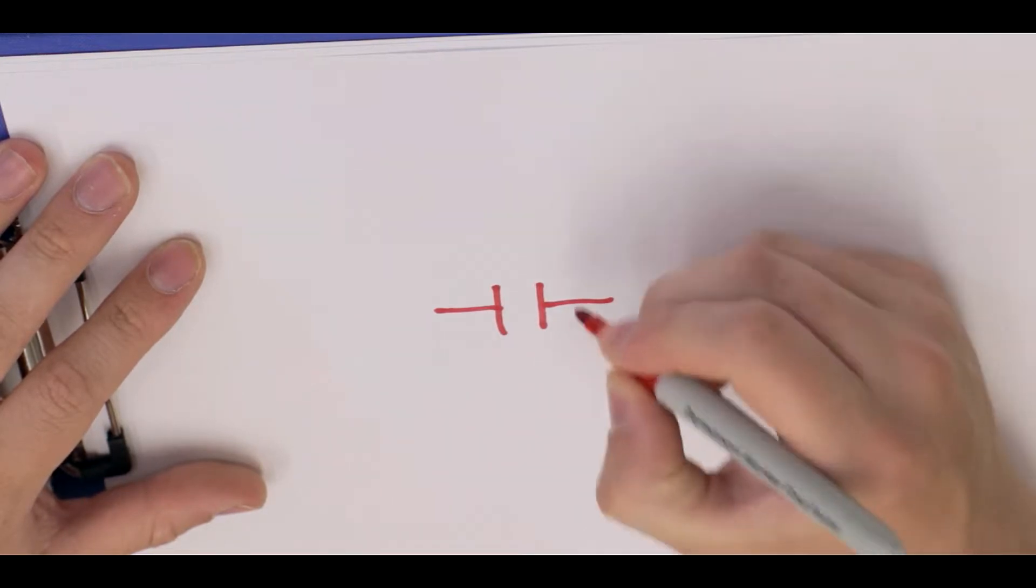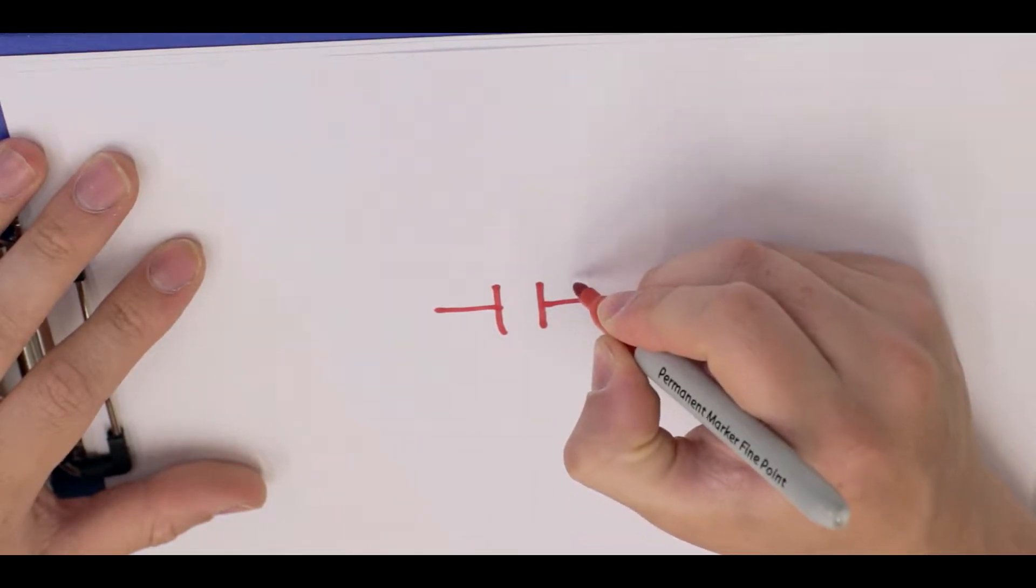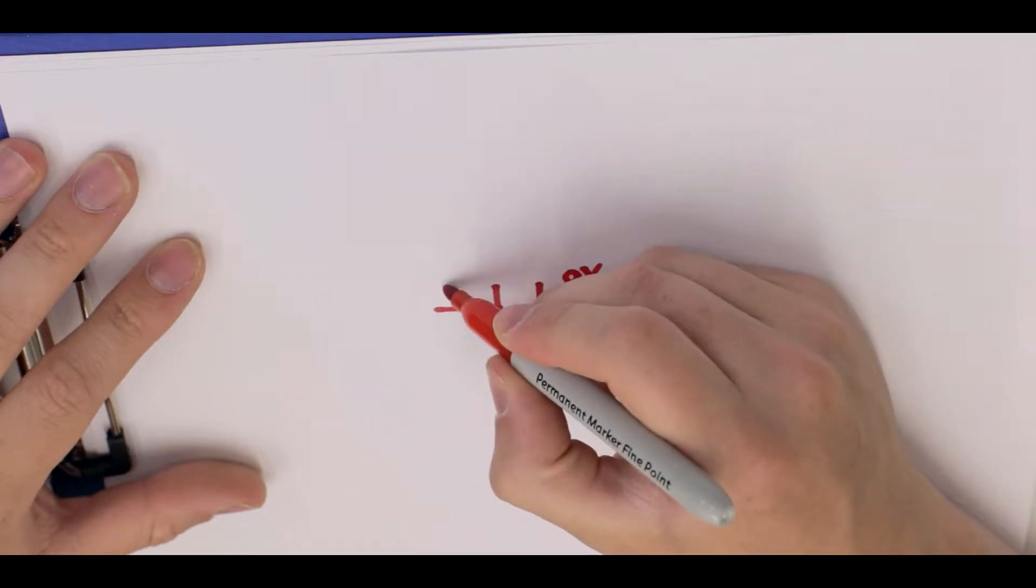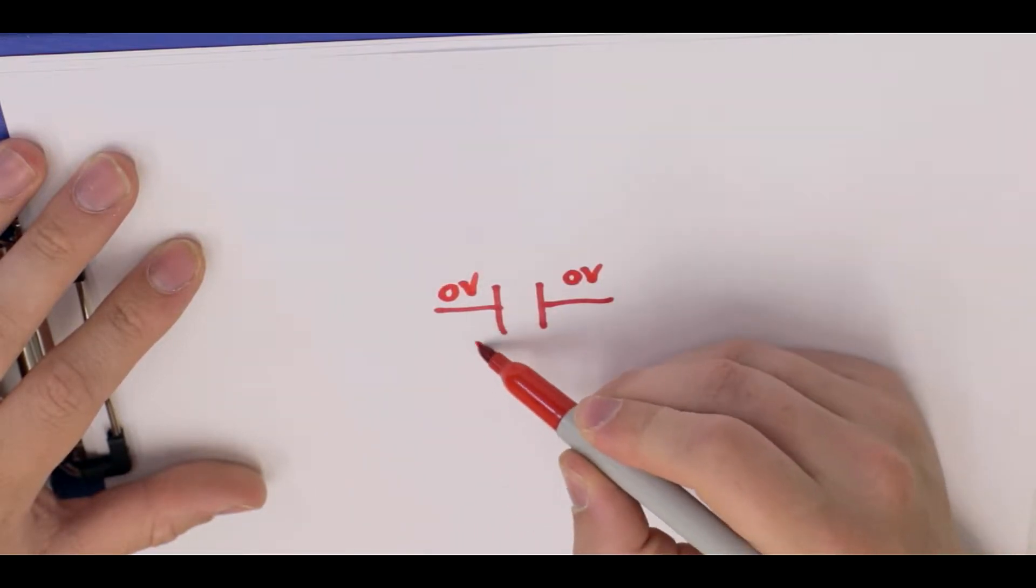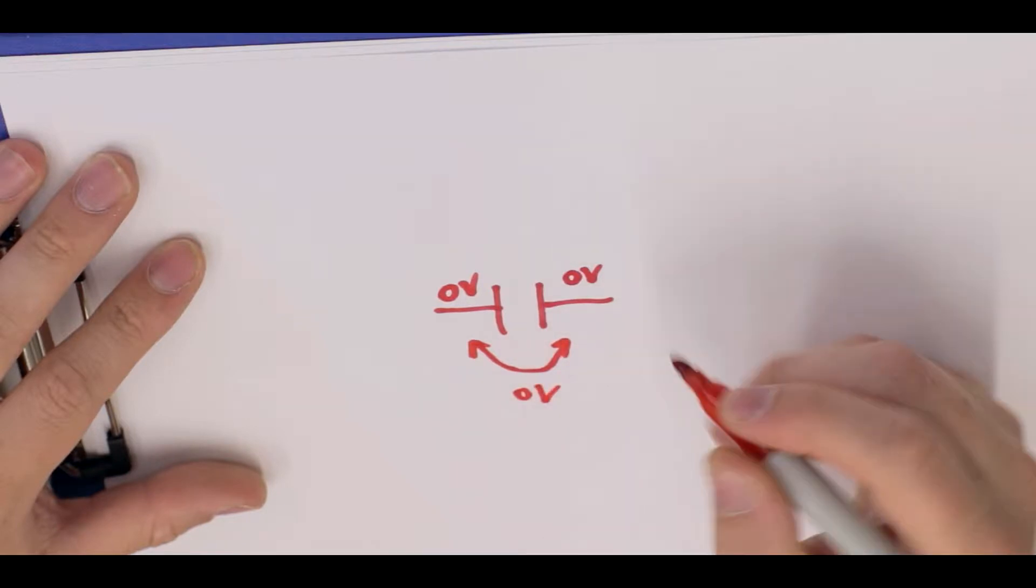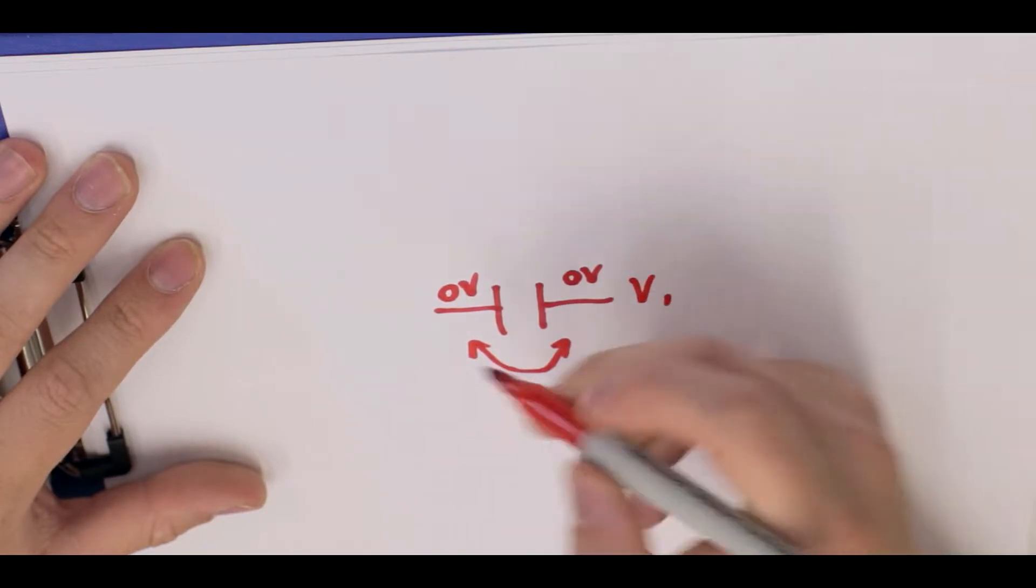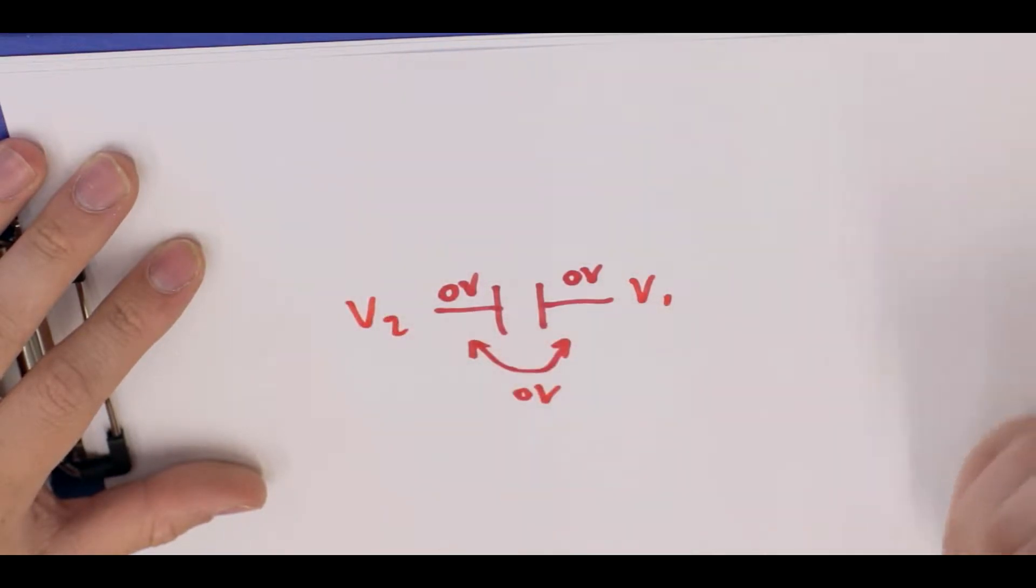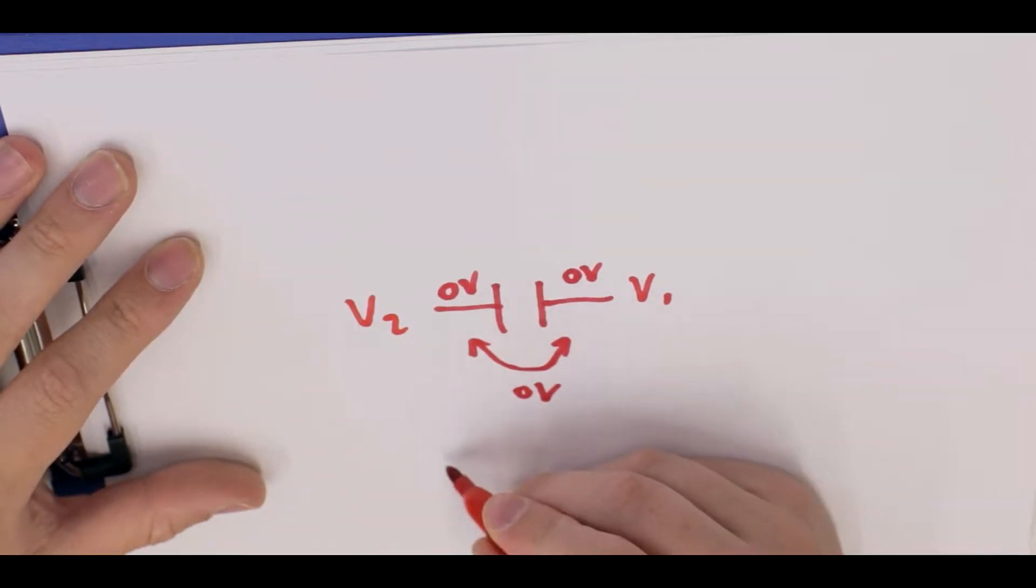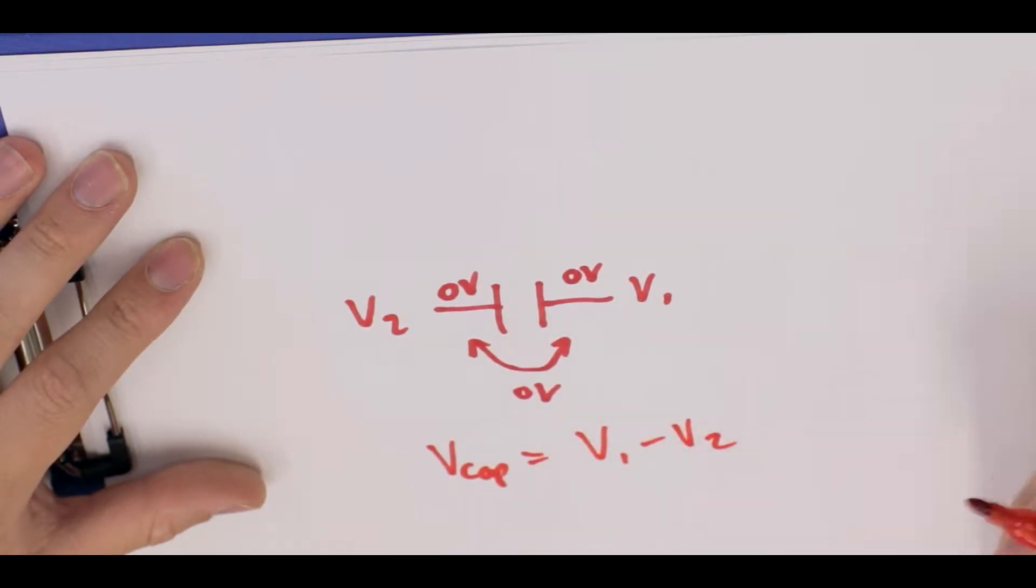So if we start by saying this side has zero volts, this side over here has zero volts, the potential difference between the two would be that minus that, which would be zero volts. So let's call this side V1 and let's call this side V2. So overall what we find is that the voltage across the capacitor, let's call it V_cap, equals V1 minus V2.